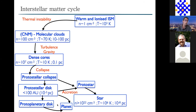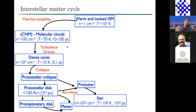Dense cores are gravitationally unstable and can collapse under their own gravity—we enter the protostellar collapse phase. During protostellar collapse, we form different objects: first the protostar, which will become the star, and also a protostellar disk of about 100 AU in size. This protostellar disk is the precursor of the protoplanetary disk in which planets will form. We are also thinking that planet formation may already begin at the protostellar disk stage. The density has increased by 20 orders of magnitude, so the Jeans length decreases as the inverse of the square root of density—we have to cover 10 orders of magnitude in length, and the temperature also increases by about six orders of magnitude.